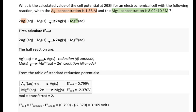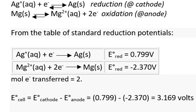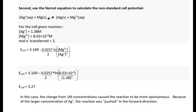We would expect E-cell under these non-standard conditions to be greater than E-cell at standard conditions. So let's first calculate E-cell at standard conditions. Using the values from a table of standard reduction potentials, we calculate 3.169 volts for E-standard. We anticipate that after substituting values into the Nernst equation, E-cell non-standard will be greater than 3.169. Also, the moles of electrons transferred in the reaction is 2. Then we substitute the values into the Nernst equation and get E-cell of 3.27 volts. As predicted, this E-cell under non-standard conditions is greater than the standard E-cell. Remember, standard conditions is when the molarities are both 1.